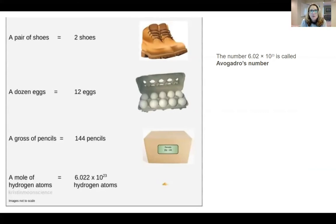If we say we have a dozen eggs, you automatically know that that means we have 12 eggs because dozen is a word we're all familiar with that means 12.